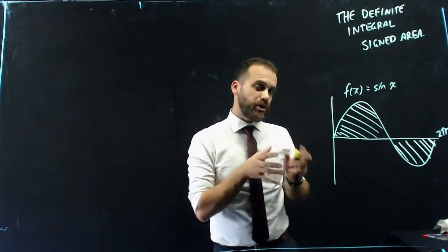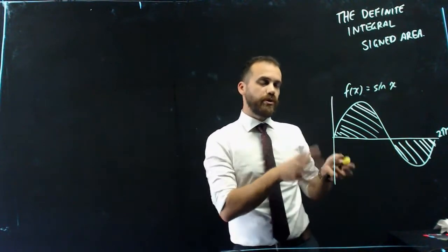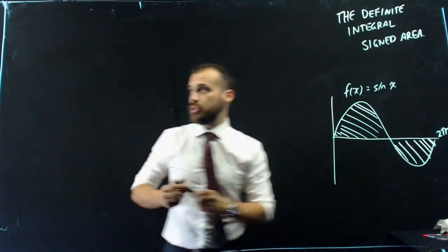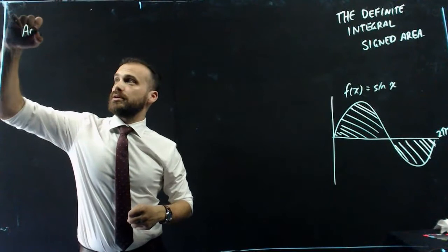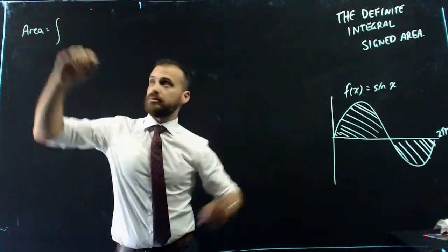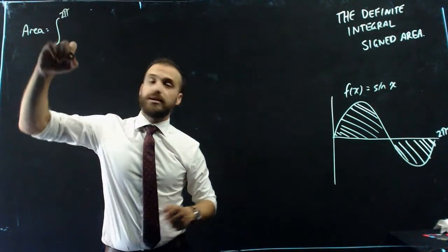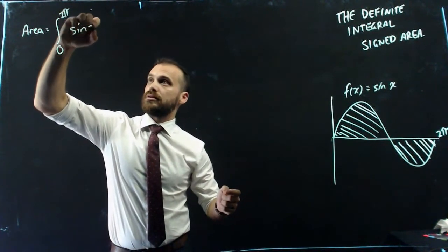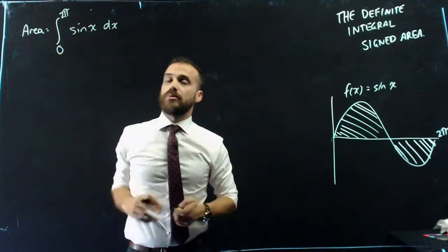Now, what I told you about definite integrals before is if you want to find the area between a function and the x-axis, all you need to do, we'll put it here, area equals the definite integral between 2 pi and this point here, which is zero of sin x with respect to x.